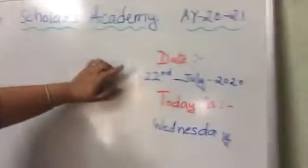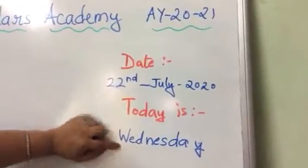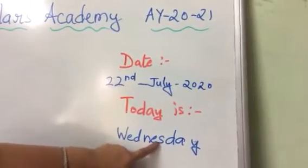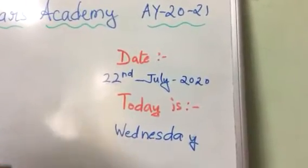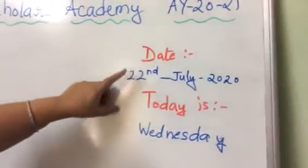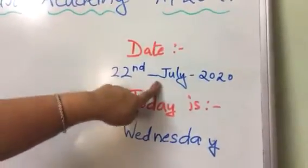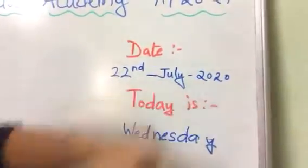Toh aaj hum ne kya karna hai? Aaj hum karenge EVS ke question answers. But before that, let's see what is the day today. Today is Wednesday — W-E-D-N-E-S-D-A-Y — and the date is 22nd July 2020.